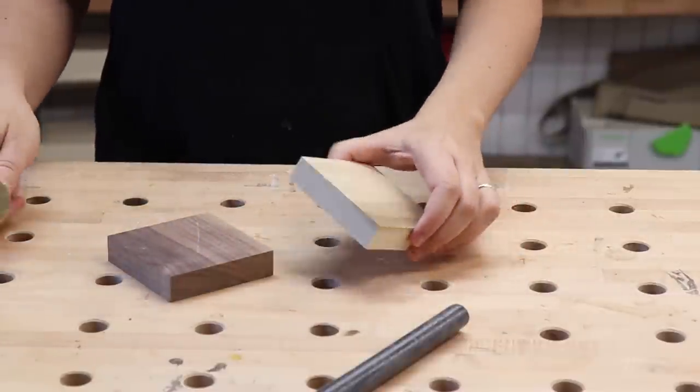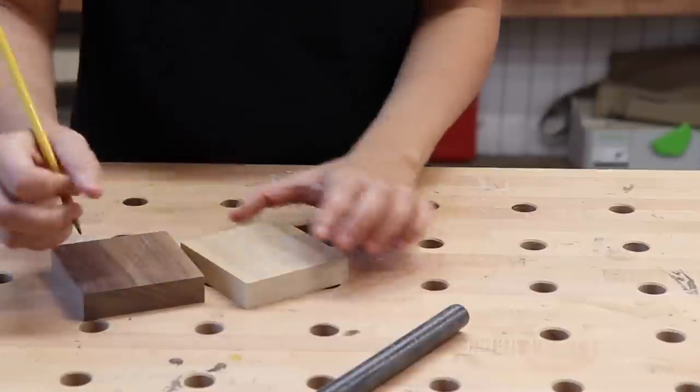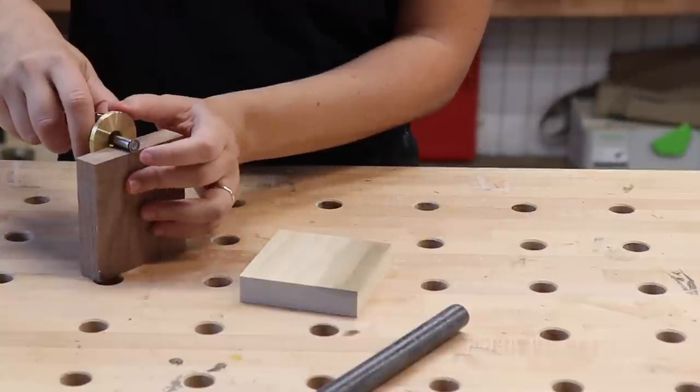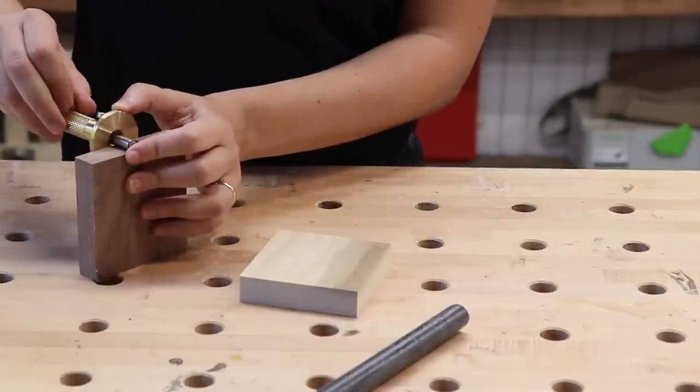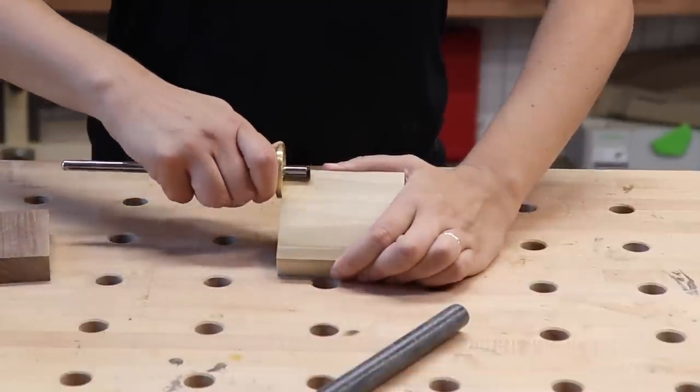The first thing to do is to mark out tails and pins. I'm going to get the thickness of my pin board and go all the way around.